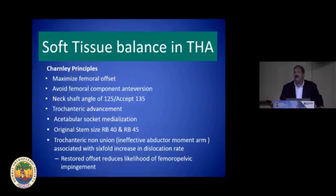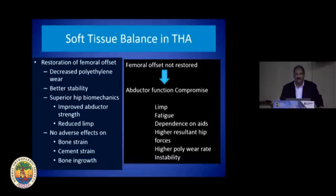Charnley — the doyen of hip replacement — designed two stems, the Round Back 14 and Round Back 45, implying these were the two ideal offsets. Trochanteric non-union, where the abductor arm is not functional, does increase the dislocation rate. If femoral offset is not restored, we have a compromise of abductor function leading to limp and fatigue.